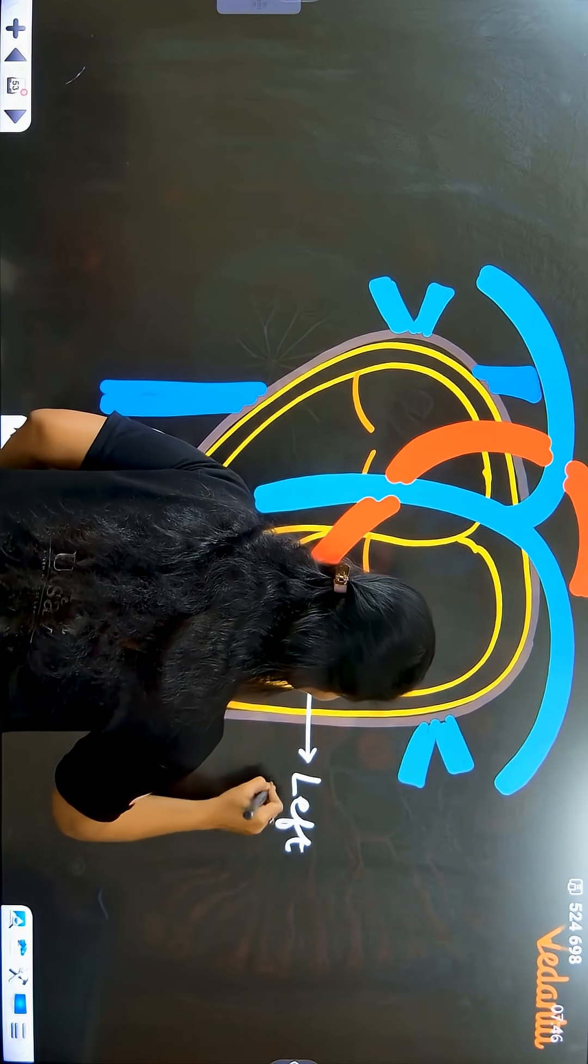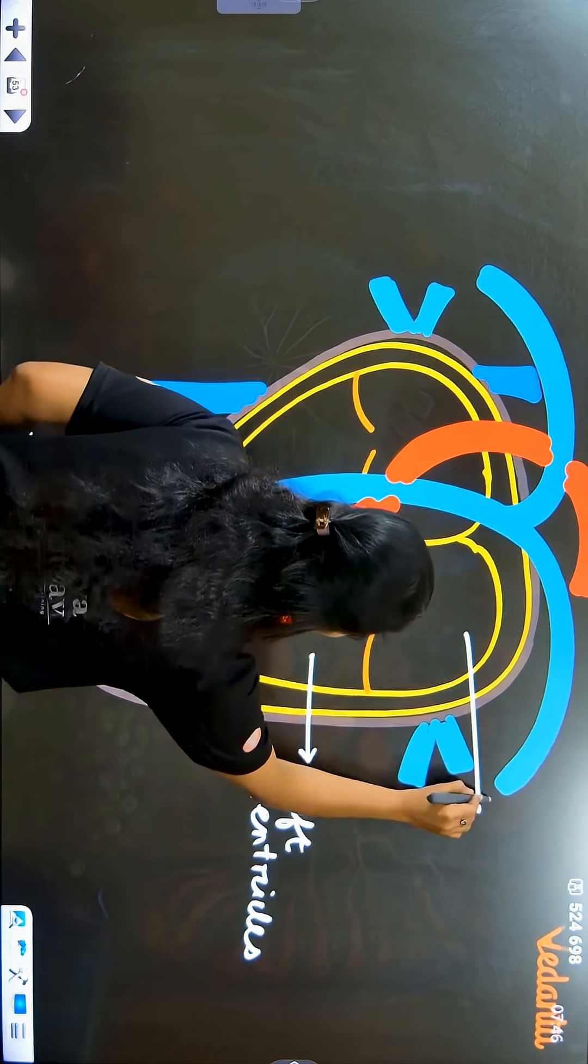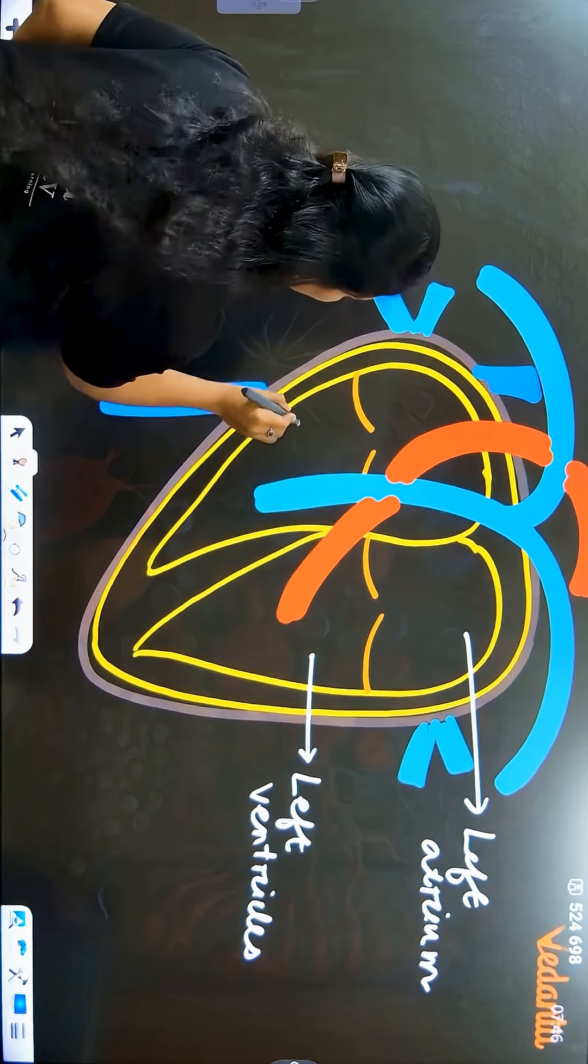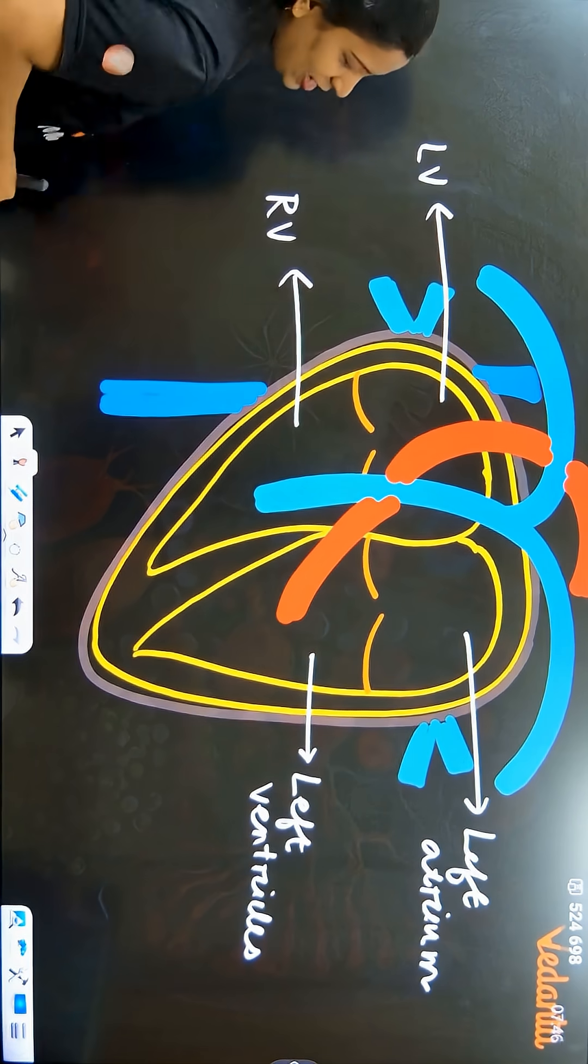This one is left ventricle. In the chambers, ventricles are found. In the upper chambers, the atrium is found. So, on the left side, it is left atrium and auricle. This is right ventricle and left ventricle.